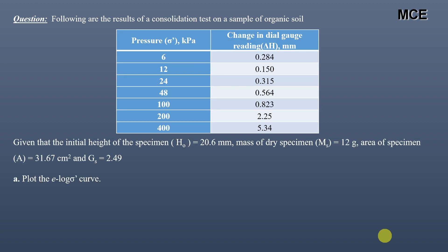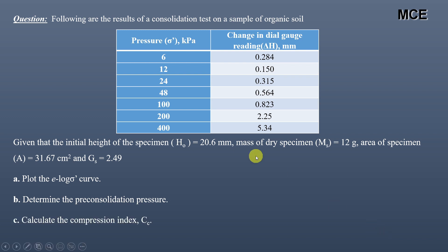Hello and welcome back to the Master Civil Engineering channel. In this video we will learn how to draw a compression curve from the test results of a consolidation test and find the value of pre-consolidation pressure and compression index. I have been given a question which states that the following are the results of a consolidation test on a sample of organic soil.